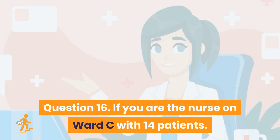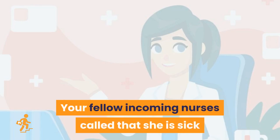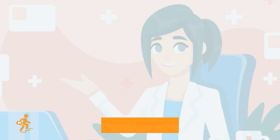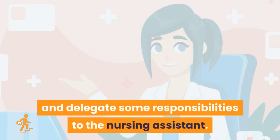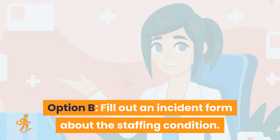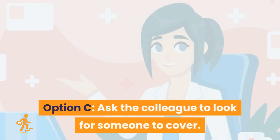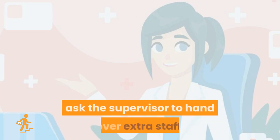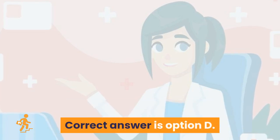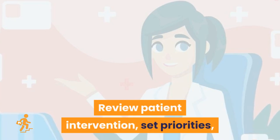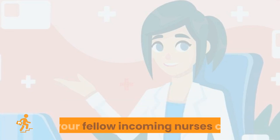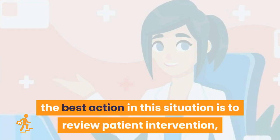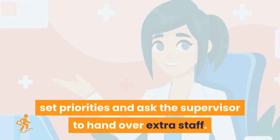Question 16. If you are the nurse on ward C with 14 patients, and your fellow incoming nurse calls in sick and cannot come to work on your shift, what will be your best action? Option A: Continue with your shift and delegate some responsibilities to the nursing assistant. Option B: Fill out an incident form about the staffing condition. Option C: Ask the colleague to look for someone to cover. Option D: Review patient intervention, set priorities, and ask the supervisor to hand over extra staff. Correct answer is Option D.